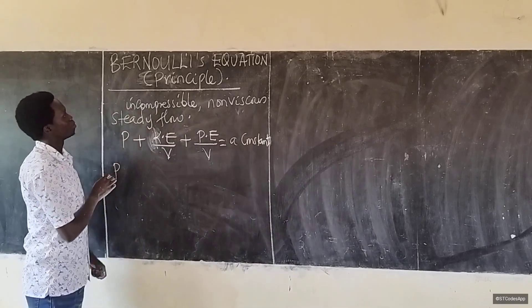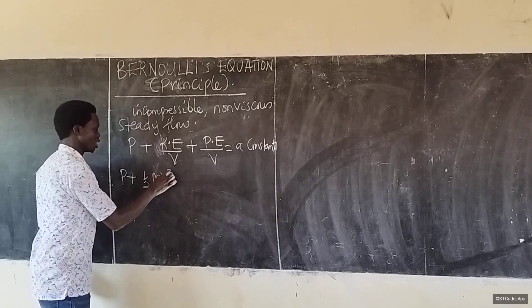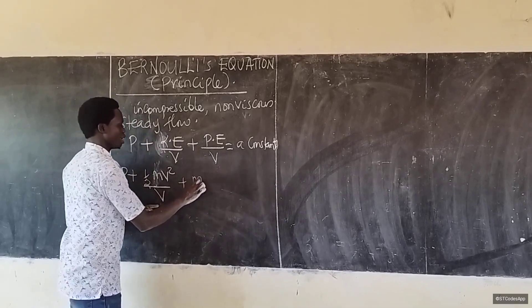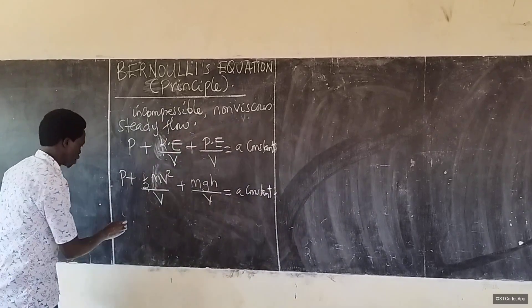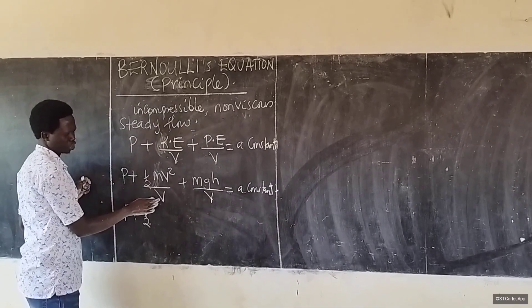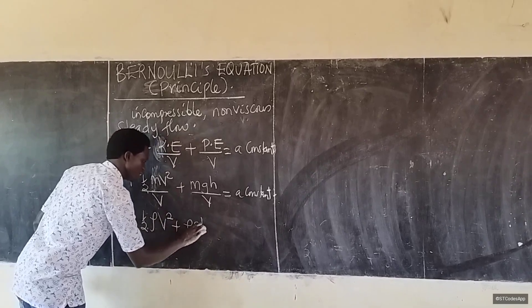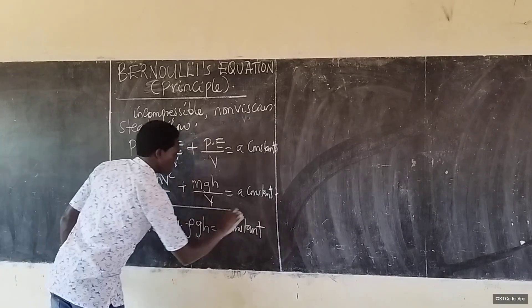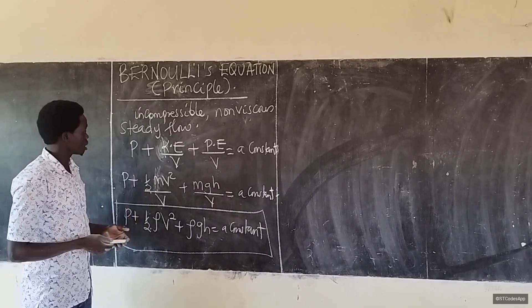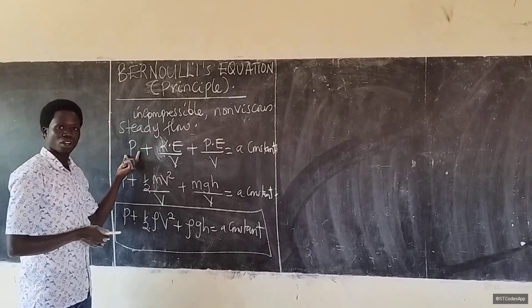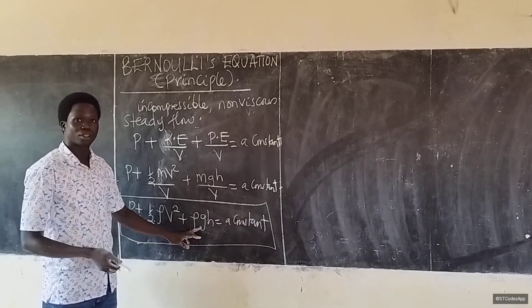So Bernoulli's principle states that P plus one-half rho V squared plus rho G H is equal to a constant. In brief, this is Bernoulli's principle: for a fluid which is incompressible and non-viscous undergoing a steady flow, pressure plus kinetic energy per unit volume plus potential energy per unit volume is constant throughout the streamline.